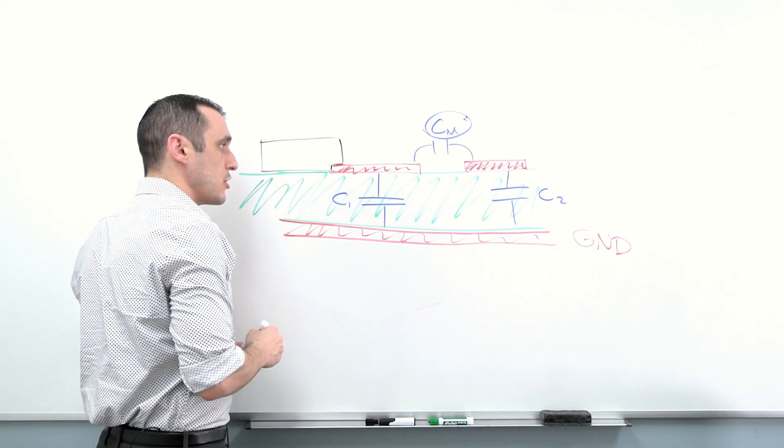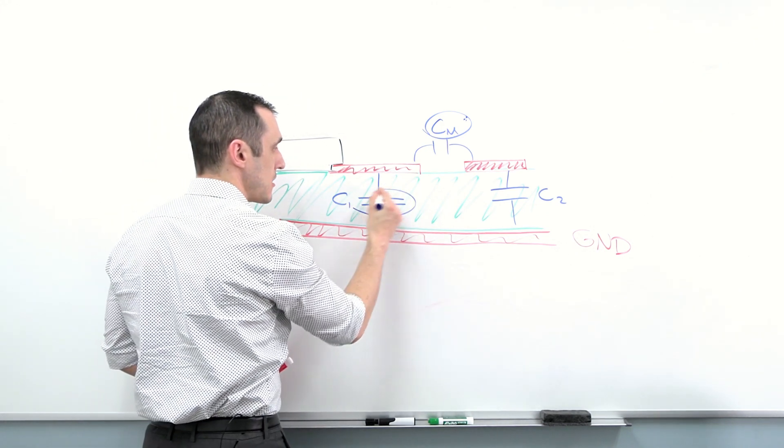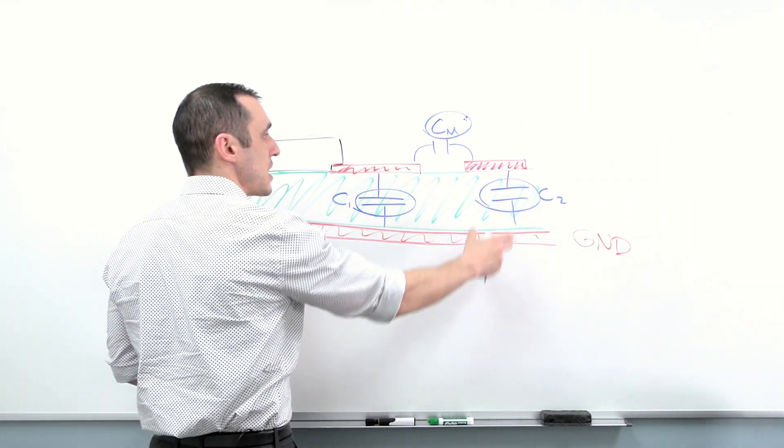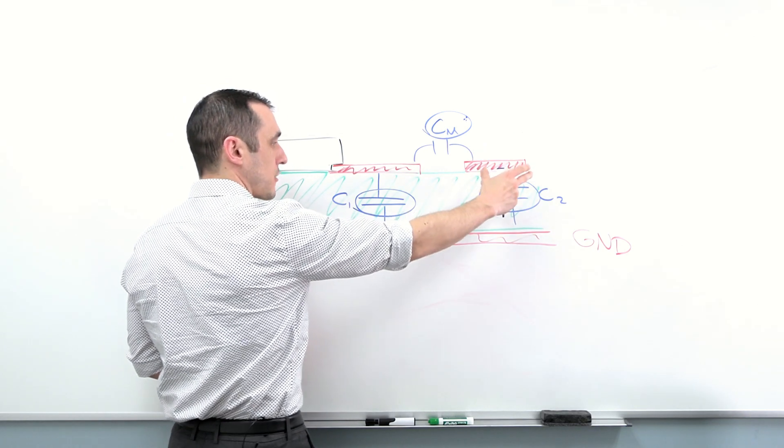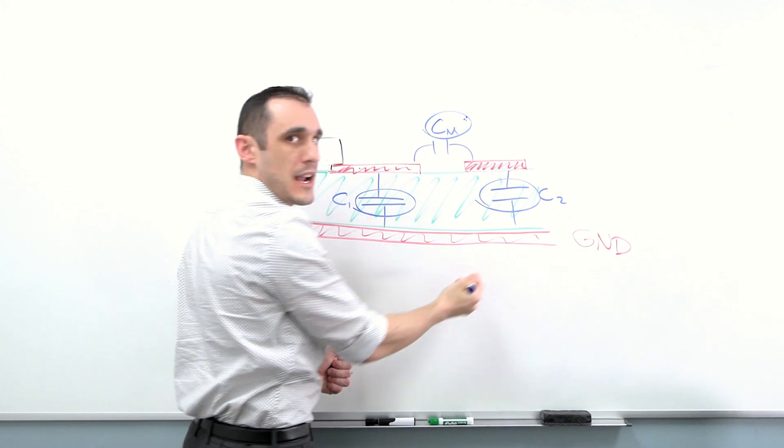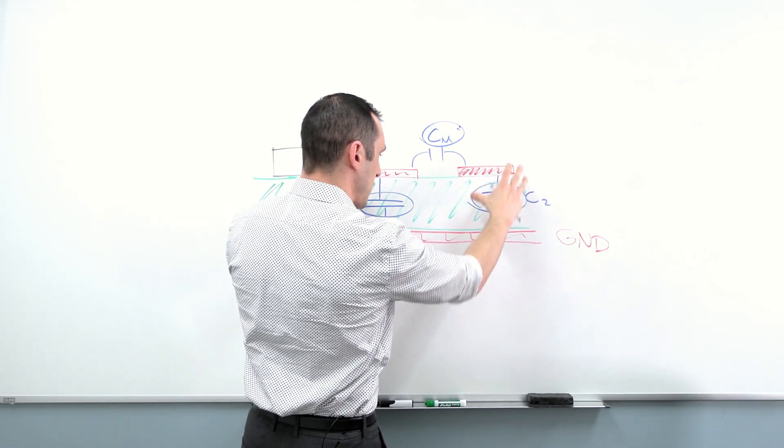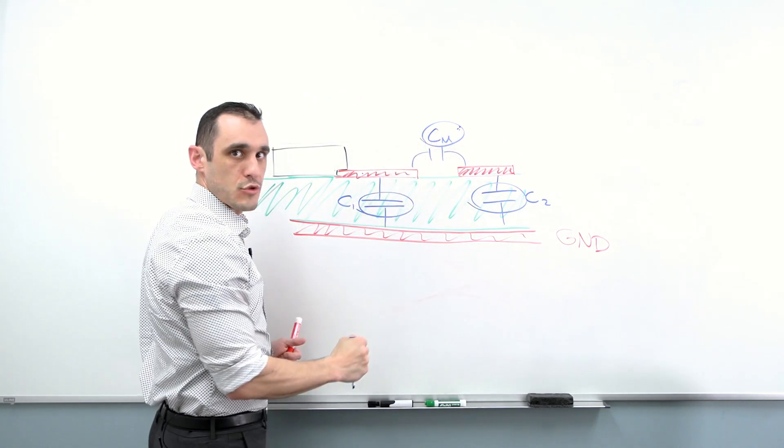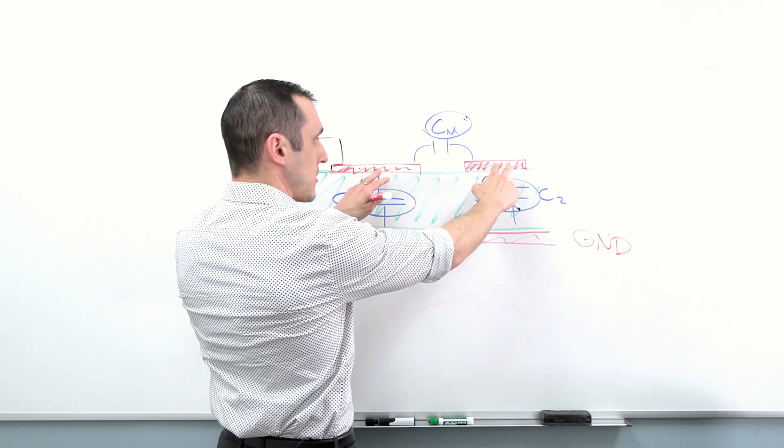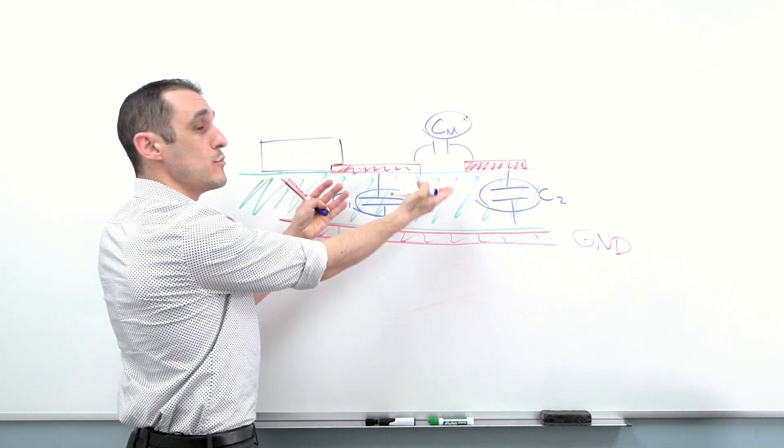Another thing that you can do is if you actually can somehow increase the capacitance here and increase the capacitance here, you can actually increase the strength of the electric field going between this plate and ground and then this plate and ground. By increasing these capacitances, you'll have stronger coupling back to ground than you will between the two traces. One method that you could use is again, you could adjust the geometry of the traces themselves, or you could take the ground and you could actually move it closer.